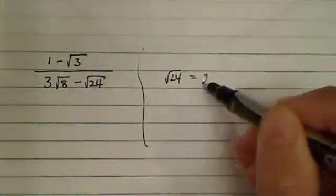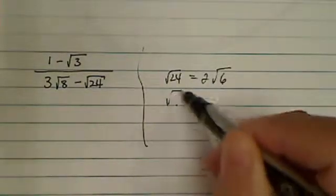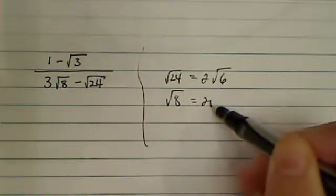Radical 24 has a 4 in there, so it's 2 radical 6. Radical 8 has a 4 in there, so it's 2 radical 2.